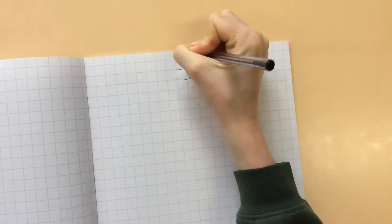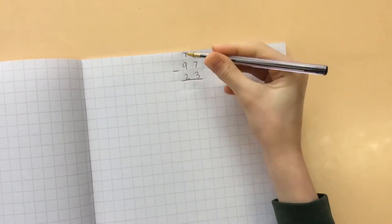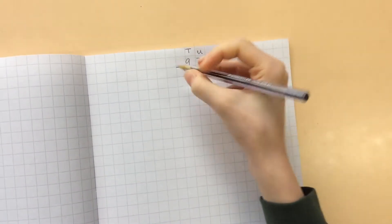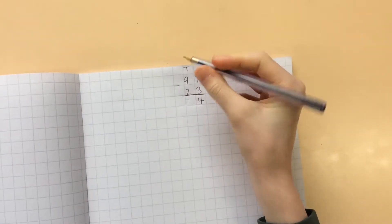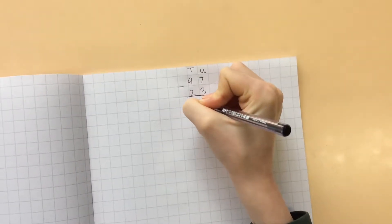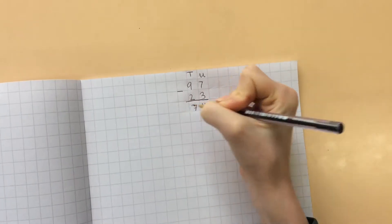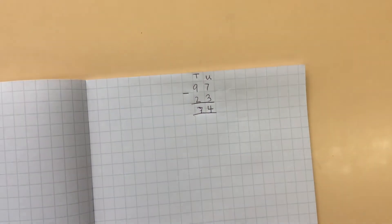This is the units column and this is the tens column. We subtract 3 from 7, which gives us 4 units, and 2 from 9 tens, which gives us 7 tens. And that's the answer of 74.